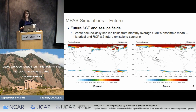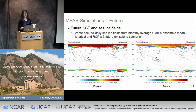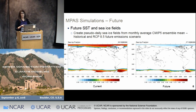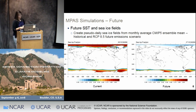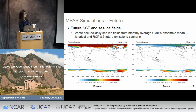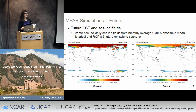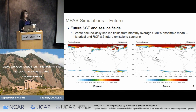We can't handle sea ice in the same way — it's not that simple. We can't just calculate sea ice deltas from the CMIP5 ensemble and add them on in the same manner. Our way around this is we used the monthly sea ice fields from the CMIP5 ensemble and created pseudo-daily sea ice fields by doing a 31-day running average. We did this for the historical period and for the future period, and then essentially replaced the sea ice in ERA-Interim with these climatological fields. The same sea ice fields were used in all of our simulations.